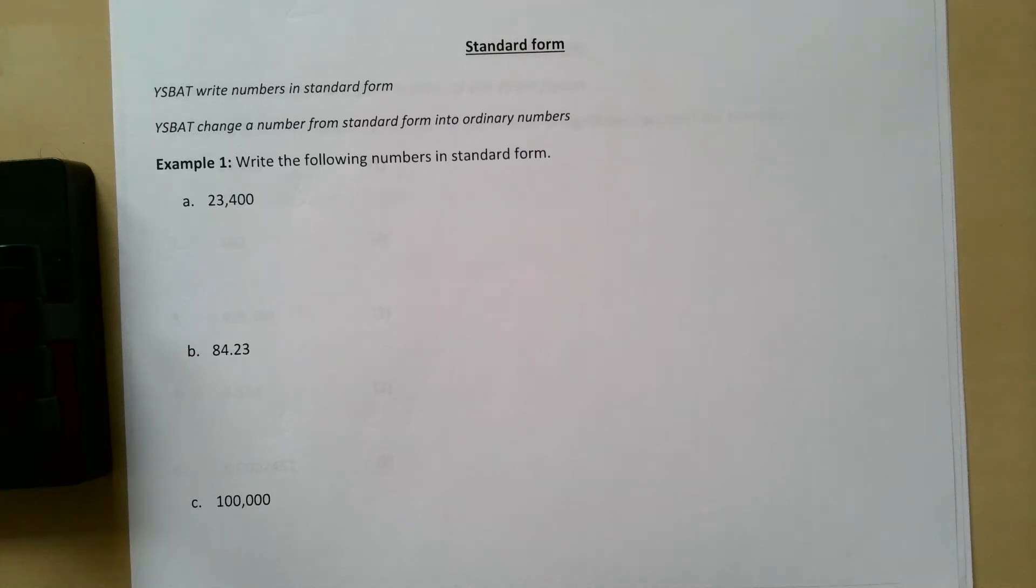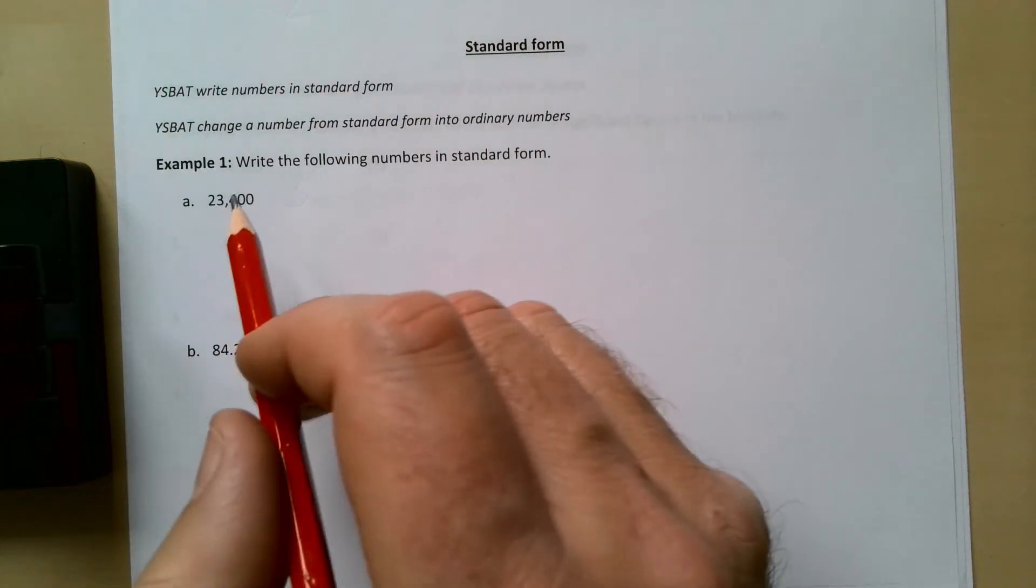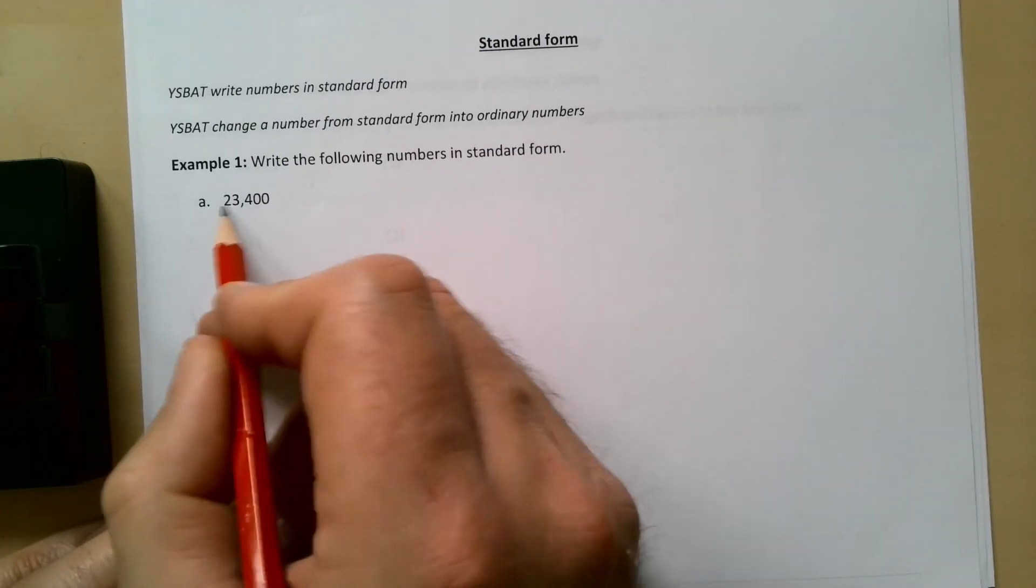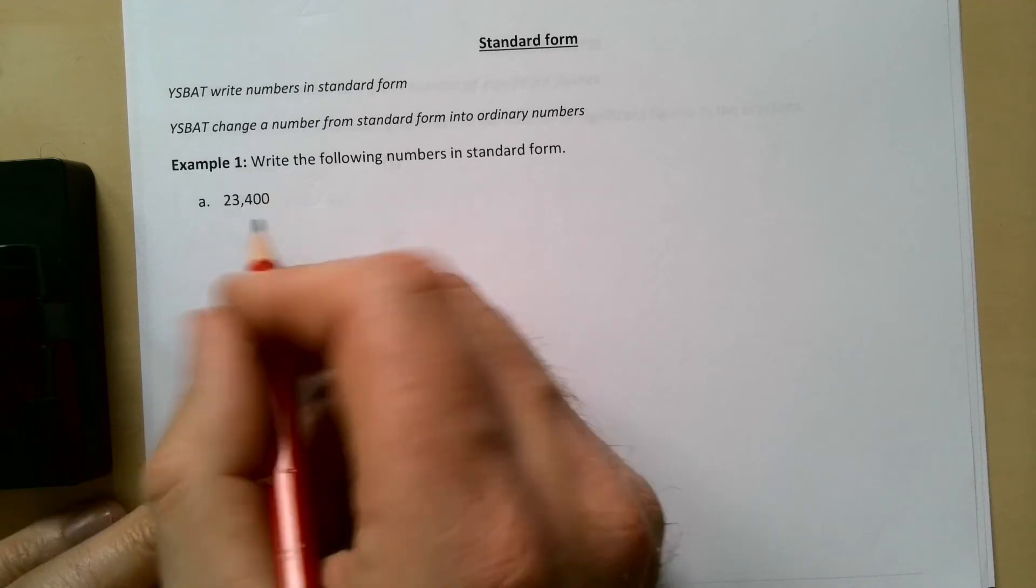This is Year 9 videos, Unit 3. We're taking a look at standard form. We should be able to take a regular number and write it in standard form. The first part of standard form is the main part of the number, which needs to be between 1 and 10.